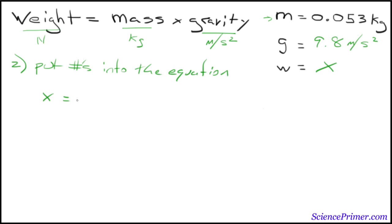So, weight is the unknown, it's X. Mass is 0.053 kilograms. And gravity is 9.8 meters per second squared.